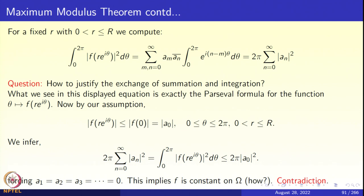How do we infer that f must be constant throughout Ω? It follows by a simple connectedness argument, which I leave to you, since that argument is not relevant for Fourier analysis but is routine from complex analysis courses. This completes the proof of the maximum modulus theorem. We have now seen two applications of the Parseval formula: one to complex analysis and one to a famous geometrical problem.